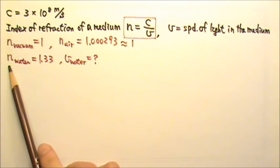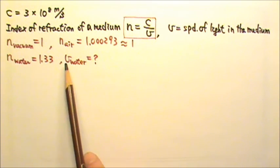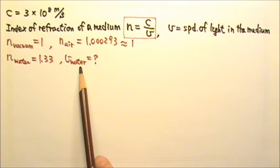You do not have to remember this, but the N for water is about 1.33. Now see if you can find the speed of light in water.